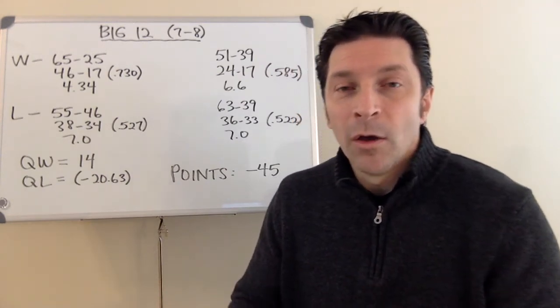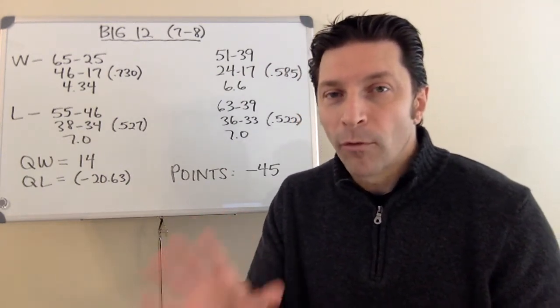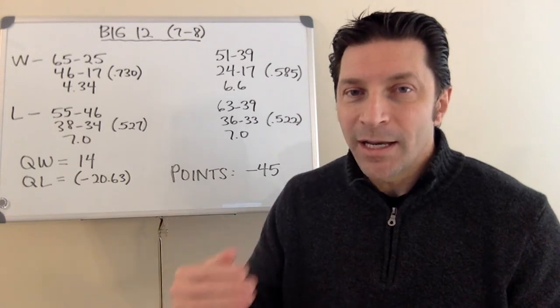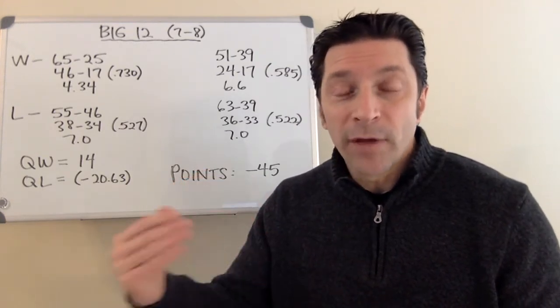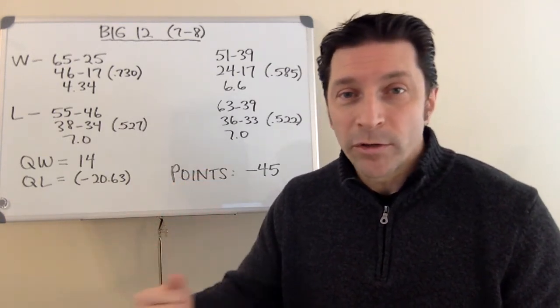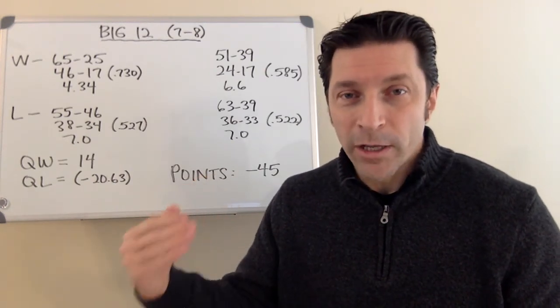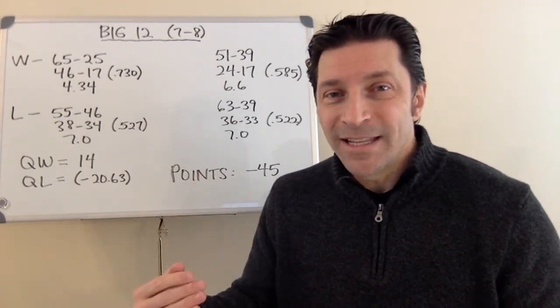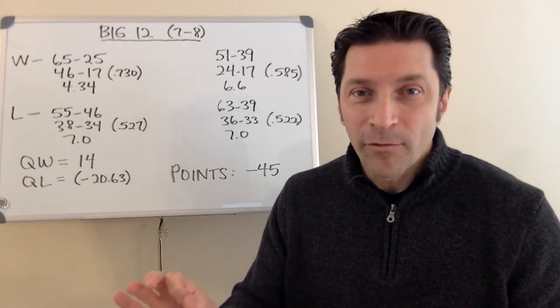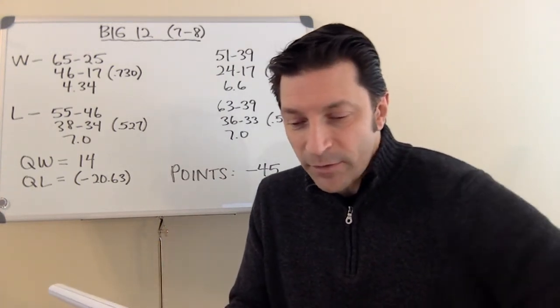So in terms of the major independents, what we did was we took their overall record and we slotted it with the other five conferences. So BYU, Notre Dame, Army, those teams, UMass, we took their record and we slotted them and seeded them in the other conferences and we averaged that seed. So BYU is a 5-seed.